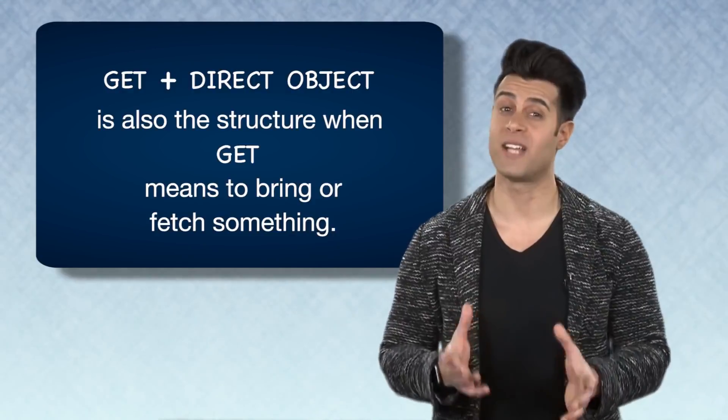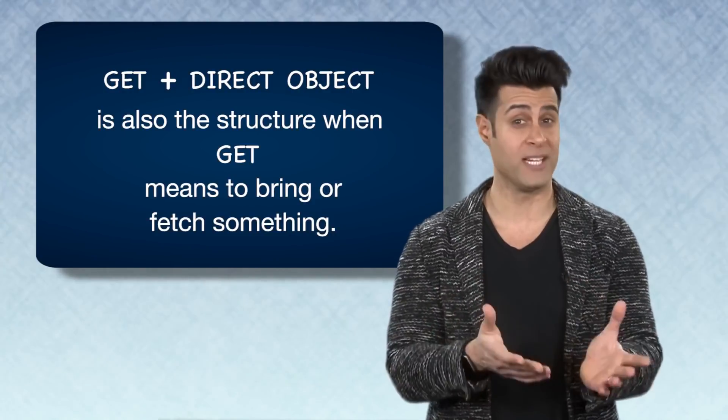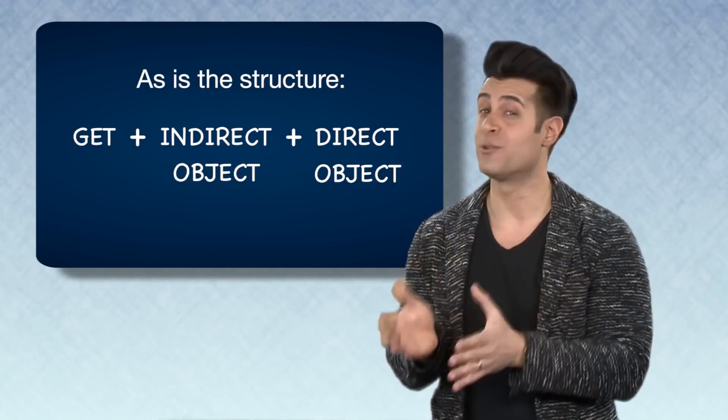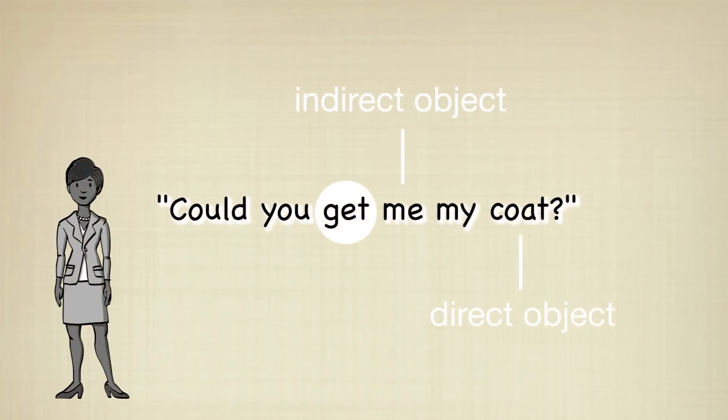Get plus direct object is also the structure when get means to bring or fetch something, as is the structure get plus indirect object plus direct object. Could you get me my coat?